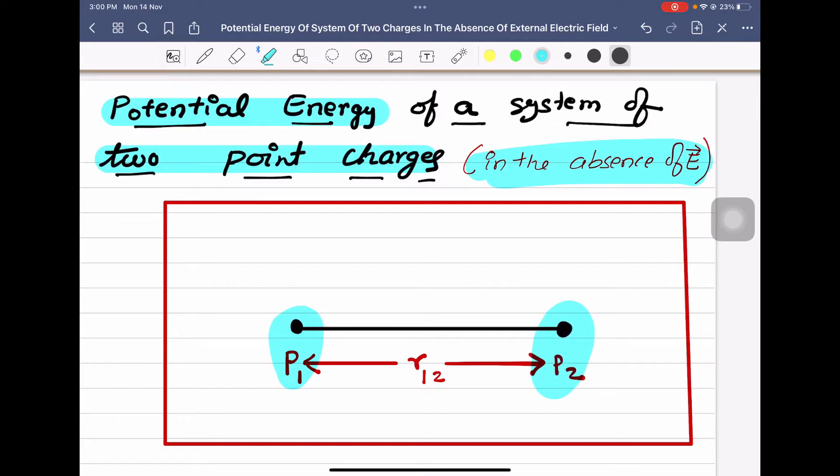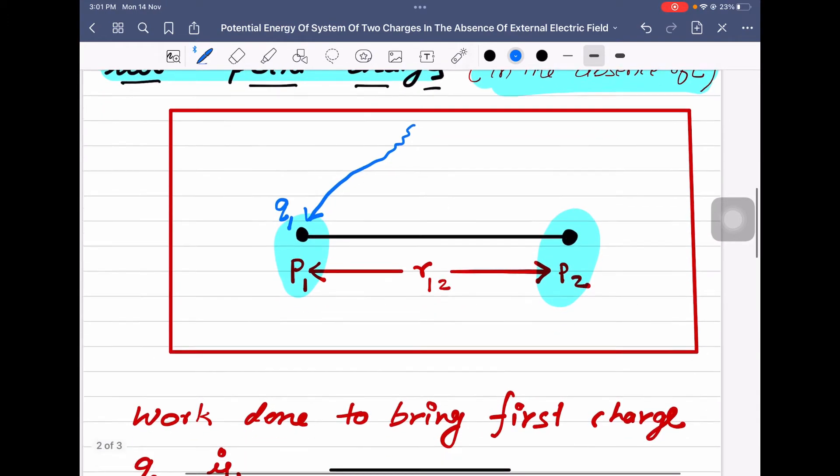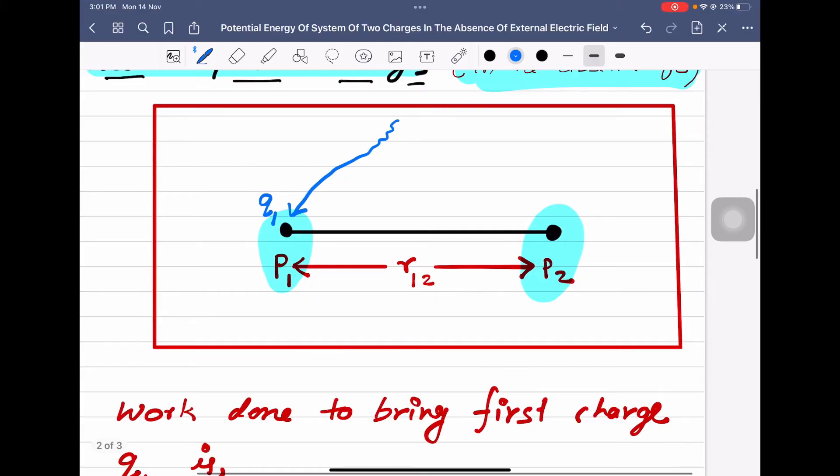First, what we will do, we will bring a charge Q1 from infinity and place it at point P1. Now what you have to observe is, since initially the external electric field was zero, there is no opposition to bring this charge Q1 and place it at point P1. So therefore,